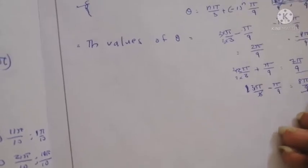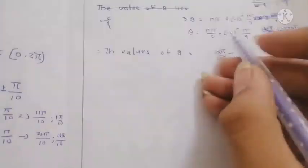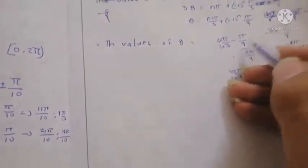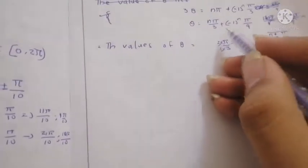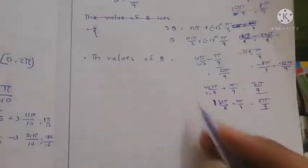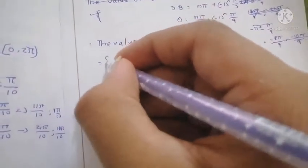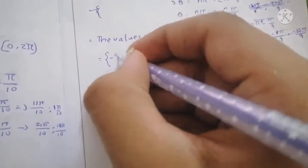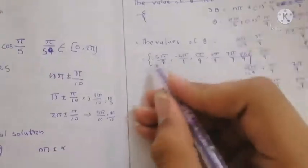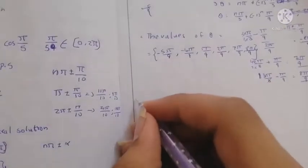The values obtained are 2π/9, 7π/9, 8π/9 (positive) and -4π/9, -5π/9 (negative). These are the solutions for the given question.